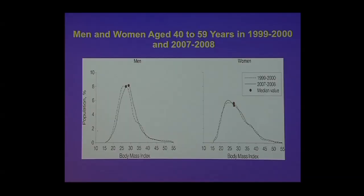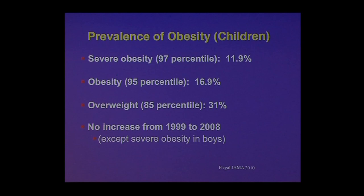We don't know why weights have relatively stabilized — whether we've hit some biological cap, whether the people who are really severely overweight are dying and not showing up in these databases, or whether some of the public health measures we've put to this are beginning to show an effect. Roughly the numbers are the same in children. The prevalence of severe obesity is now 12% in children. Obesity is defined a little bit differently in kids based on growth curves, but it's about half the rate that it is in adults.